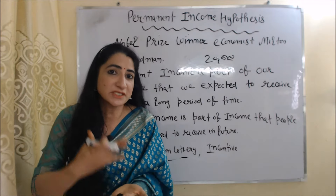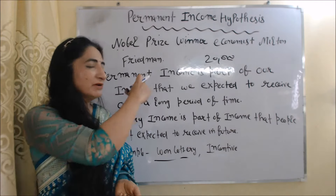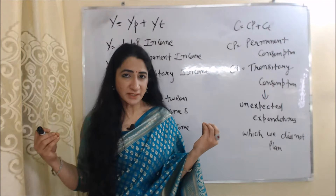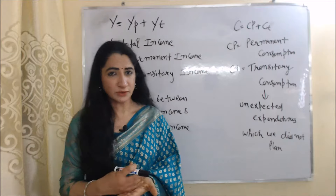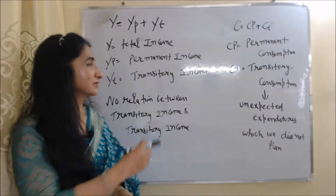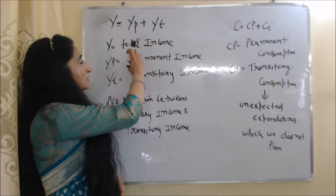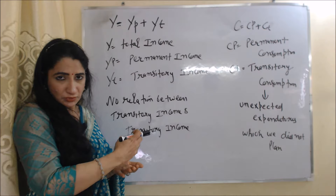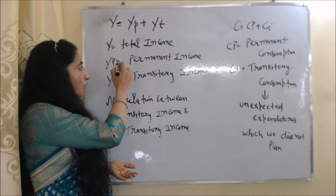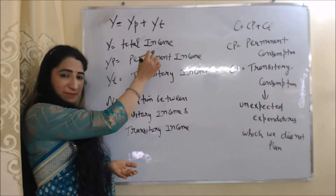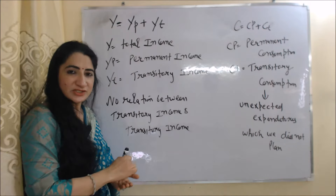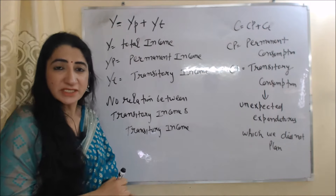Our consumption is primarily affected by our permanent income. Friedman divides income into two parts: Y equals YP plus YT, where Y is total income, YP is permanent income, and YT is transitory income.